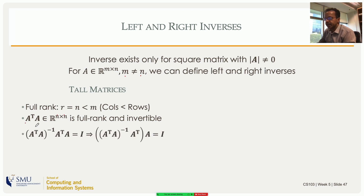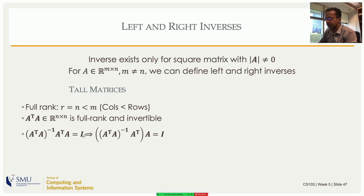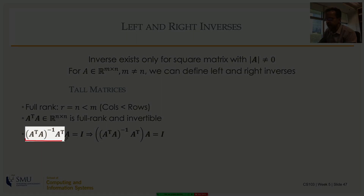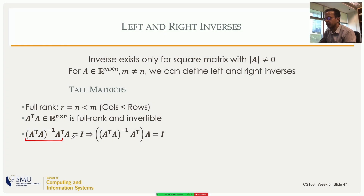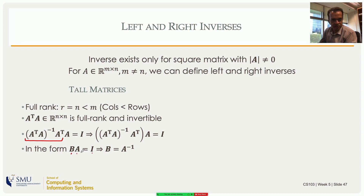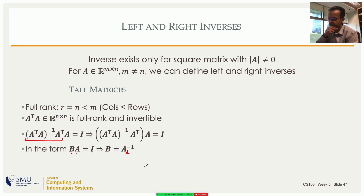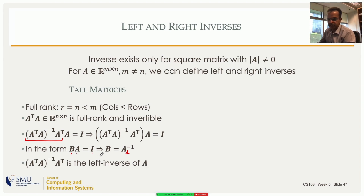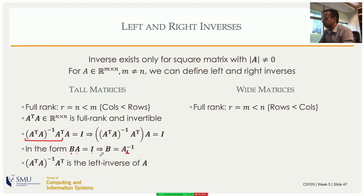Since A transpose A is invertible, A transpose A times its inverse is I. Multiplying on the left: grouping (A transpose A) inverse times A transpose together gives a matrix B such that B times A equals I. This is a left inverse — multiplying A on the left gives I, but you cannot multiply on the right because the dimensions don't work. This is the definition of the left inverse.